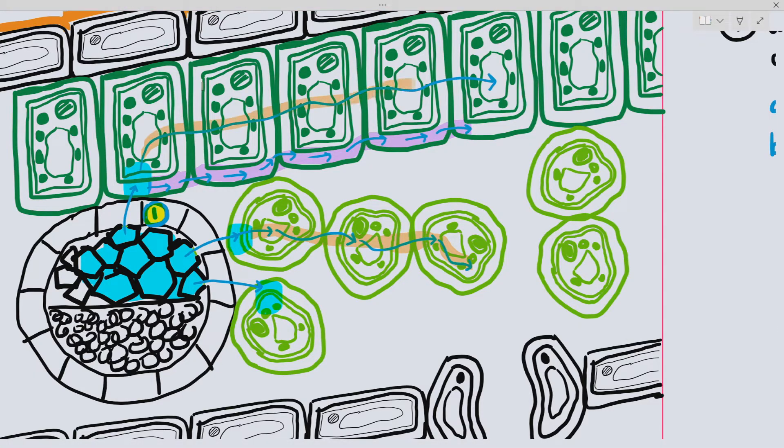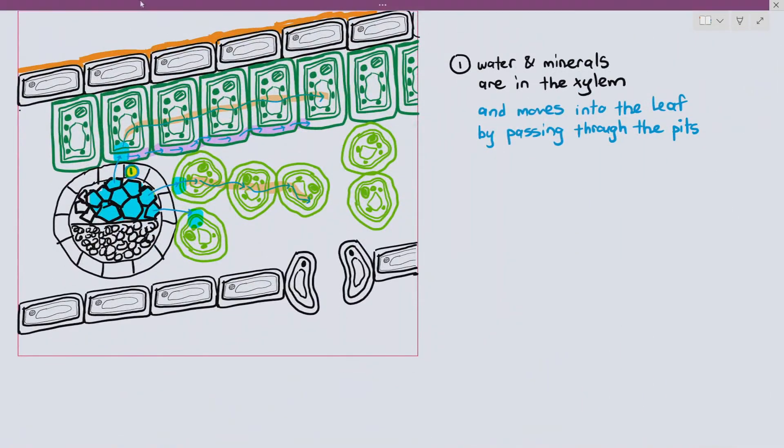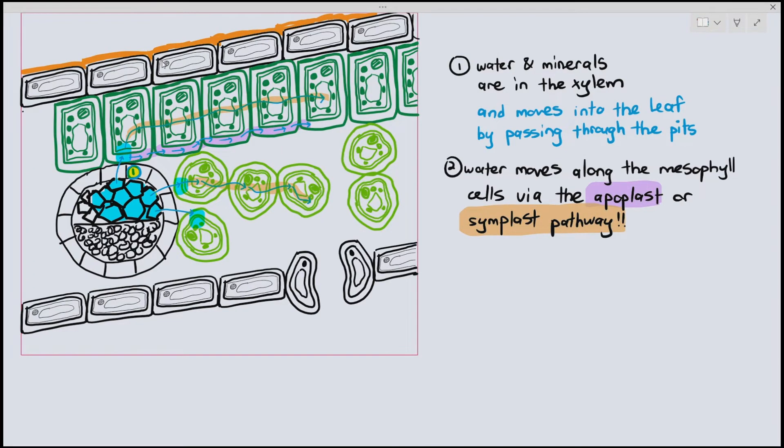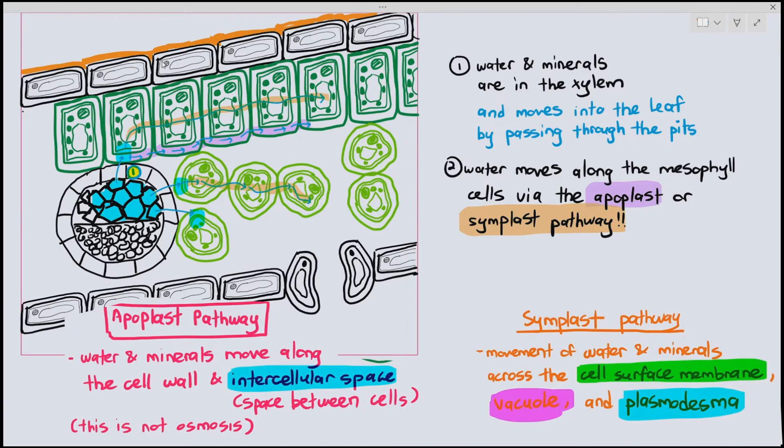And that pathway is known as the symplast pathway. So water and minerals move along the mesophyll cells via the apoplast or symplast pathway. If you need a little bit of revision as to what the apoplast and symplast pathways are, you can go back to the previous content. The apoplast and symplast pathway in the roots are the same as the apoplast and symplast pathway in the leaf, in terms of definition at least.